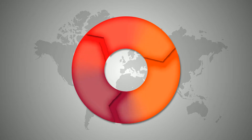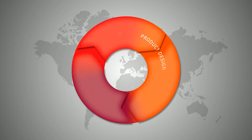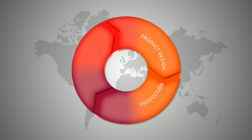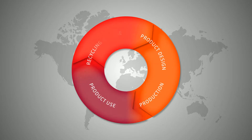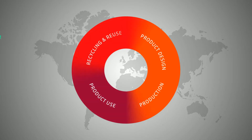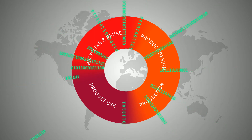In order to move from a linear to a circular economic system, there's one key thing everyone involved must have: information about the composition of the products, in the form of digital data.